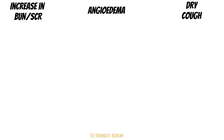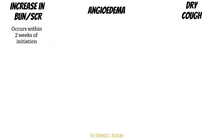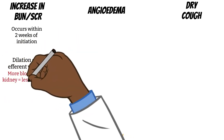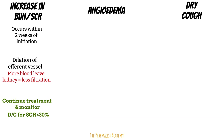An increase in serum creatinine or BUN is a side effect we expect to see usually within the first two weeks of treatment. It occurs due to dilation of the efferent vessel — the one that blood exits from — causing more blood to flow out and decreasing filtration of the blood in the glomerulus. Therefore, creatinine and BUN that would normally get filtered out don't, leading to increased serum levels. To manage this, since we expected it, we would continue treatment and monitor the patient closely. For serum creatinine above 30% from baseline, we would discontinue these agents — and no need to switch to ARBs in this case because you would get the same effects.